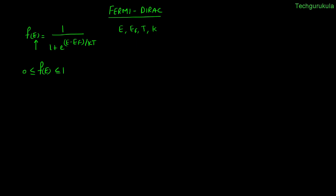Now let us try to plot the function f(E). In order to do that, we need to know the values of temperature T and EF. I am taking the temperature to be 0 Kelvin to start with. We are not going to assume any specific value for EF; instead, we will talk about the energy level E with respect to EF.